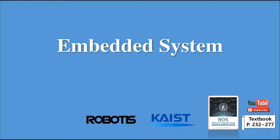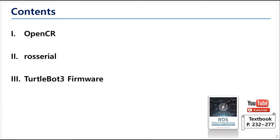Hello, and this is chapter 9. In this chapter, we'll learn how to use the embedded system for ROS. The embedded board that we are going to focus on is the OpenCR. To use the OpenCR or other embedded boards for ROS, we should know ROS serial. After that, we'll see the TurtleBot3 firmware, which is an example of embedded ROS.